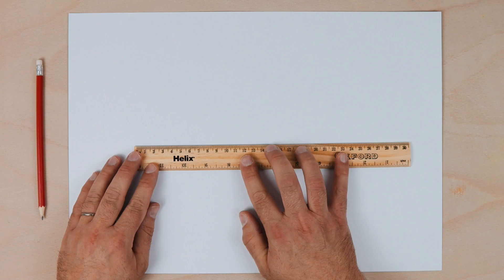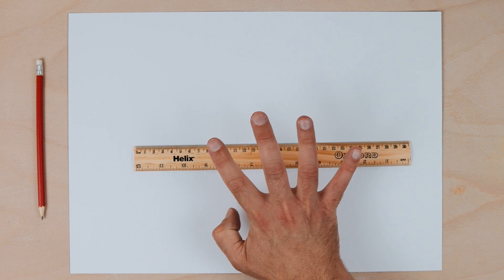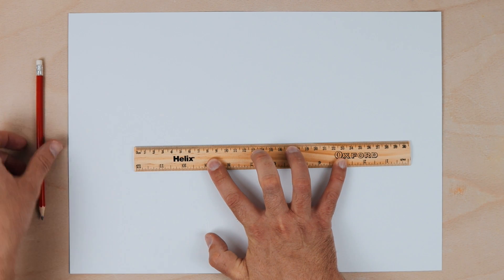I like to show them that if it's a horizontal line, you put your four fingers in the middle of the ruler and spread them out.